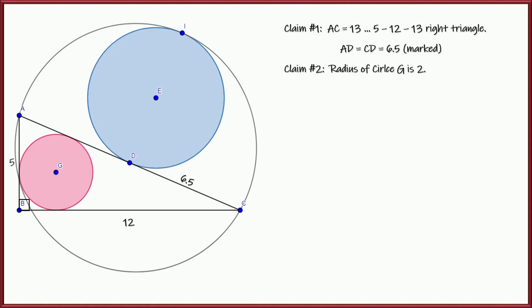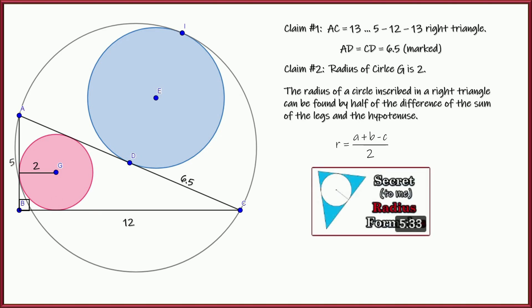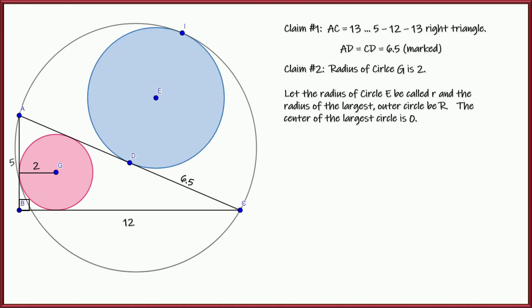You could use the Pythagorean theorem or you could just recognize that as a fact. And, of course, since the hypotenuse is 13, then A to D and C to D are both 6.5. So I'm going to go ahead and put that there. And let's clean this up a little bit. Now, second fact, second claim, radius of the circle G is 2.